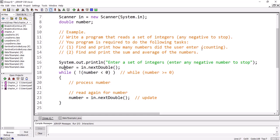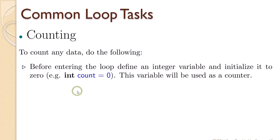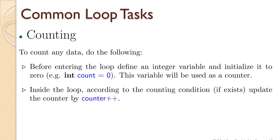Our first task is counting. To count, you need to do three steps. Step one: define a variable that works as a counter, declare it as integer, and initialize it to zero before the loop. Step two: inside the loop, update this counter — sometimes preceded by a condition; otherwise just do counter++. Step three: after exiting the loop, display its value. These are the main steps for any type of counting.